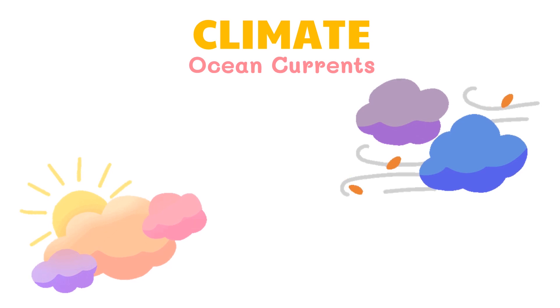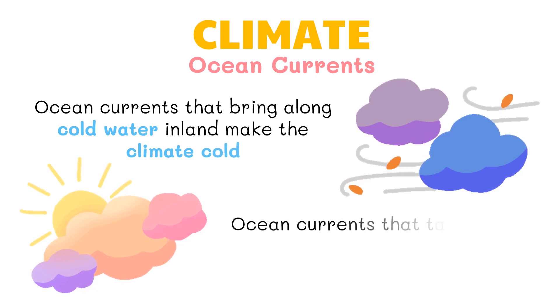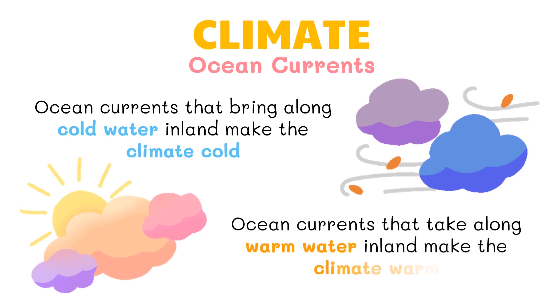Therefore, ocean currents that bring cold water inland make the climate cold. On the other hand, ocean currents that bring warm water inland make the climate warm.